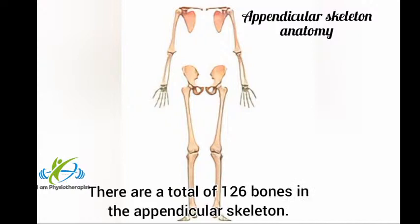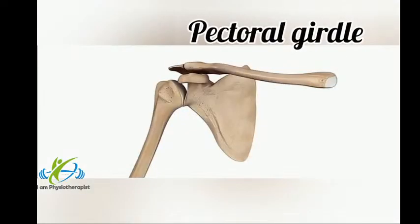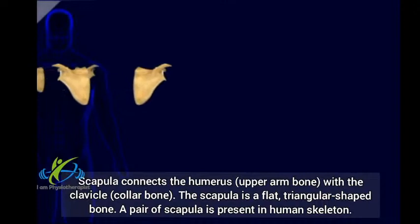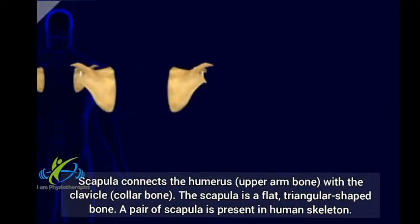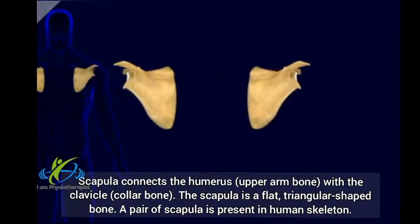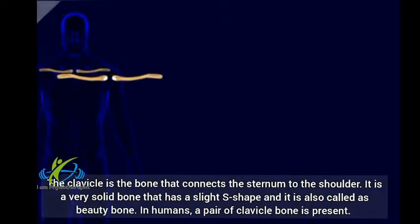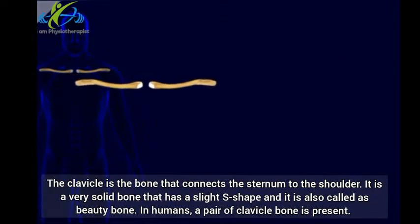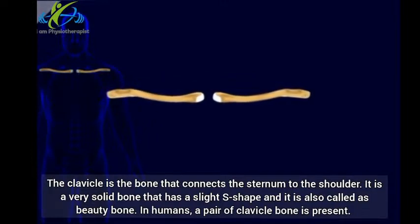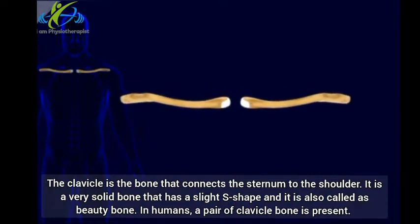Appendicular skeleton anatomy: There are a total of 126 bones in the appendicular skeleton. Pectoral girdle: The pectoral girdle is where the arms attach to the axial skeleton. It is made up of the clavicle and scapula. The scapula connects the humerus with the clavicle and is a flat, triangular-shaped bone; a pair of scapulae is present in the human skeleton. The clavicle is the bone that connects the sternum to the shoulder; it has a slight S-shape and is also called the beauty bone. A pair of clavicle bones is present in humans.